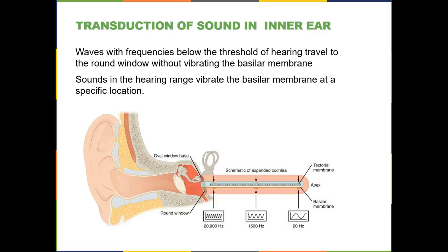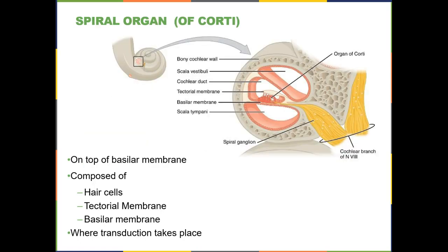Sound waves you cannot hear don't disturb anything as they pass through the ear. Sound waves at frequencies you are capable of detecting cause the basilar membrane — the bottom membrane of the cochlear duct — to vibrate at different locations. Now we need to zoom in and understand the anatomy inside the cochlear duct. The structure responsible for transducing sound is called the organ of Corti.